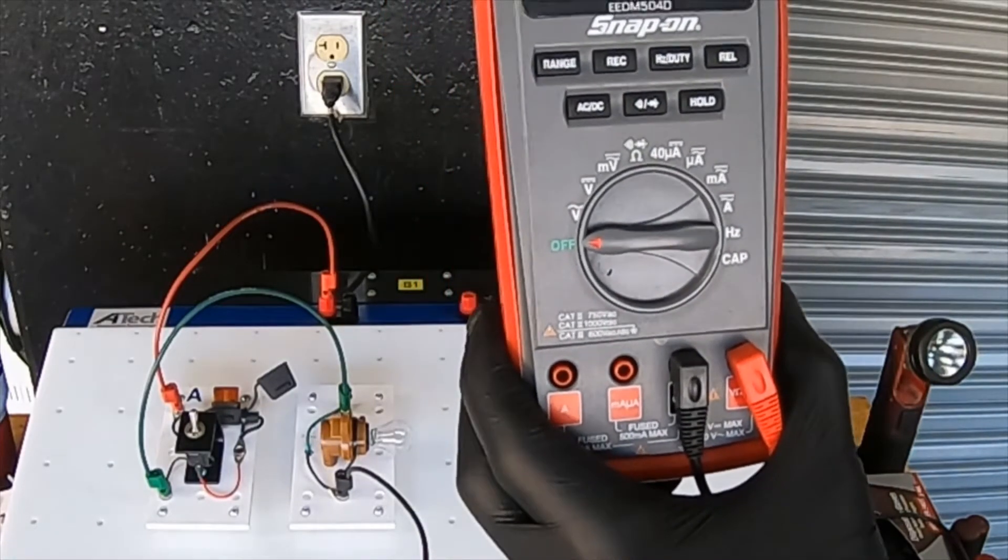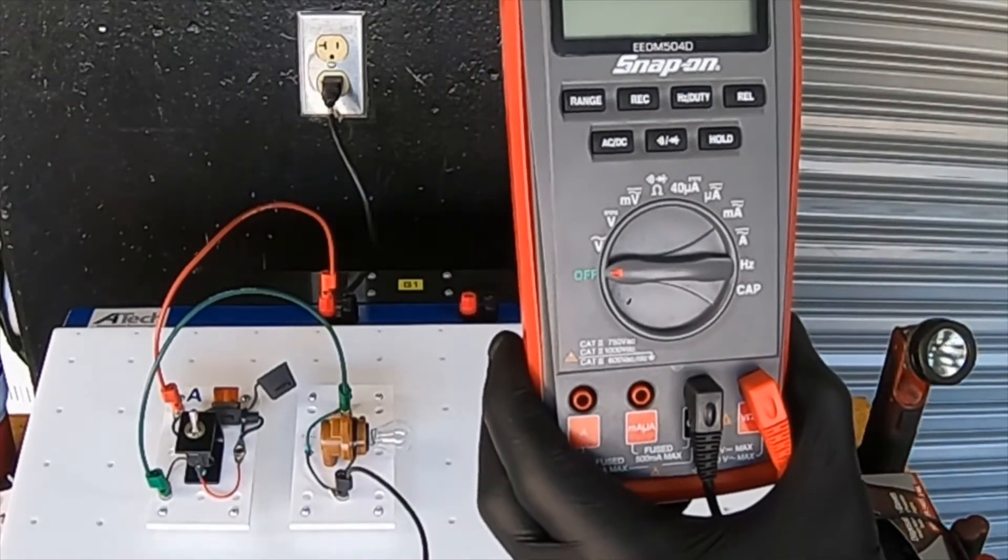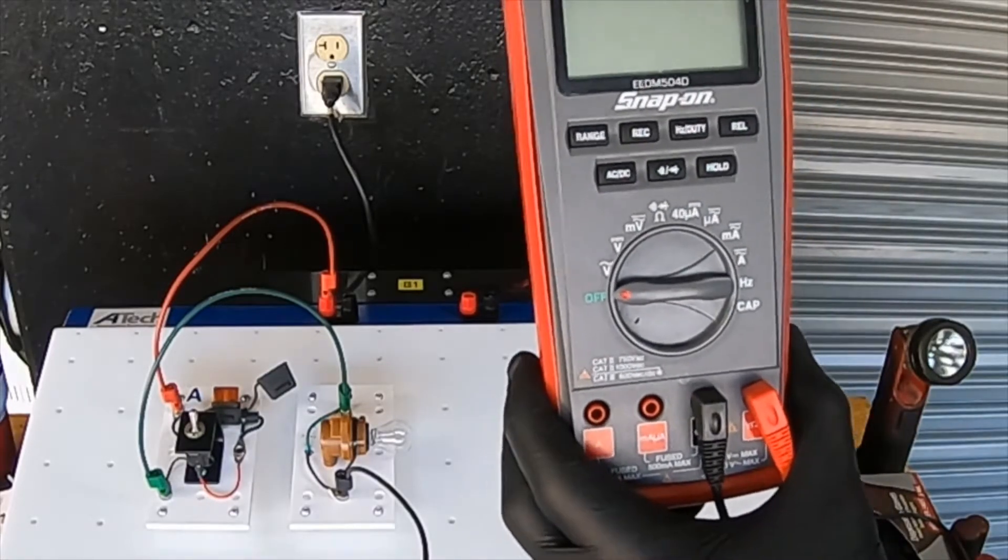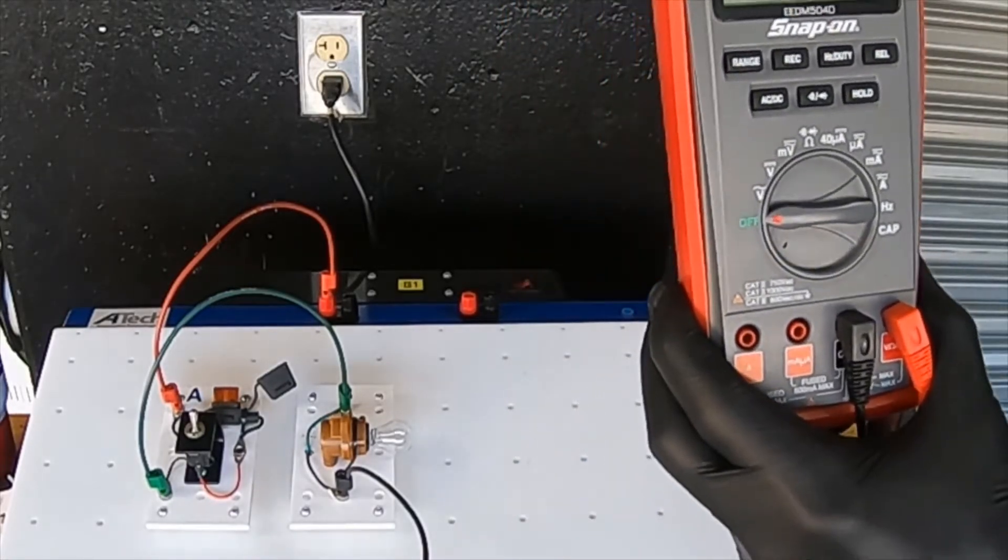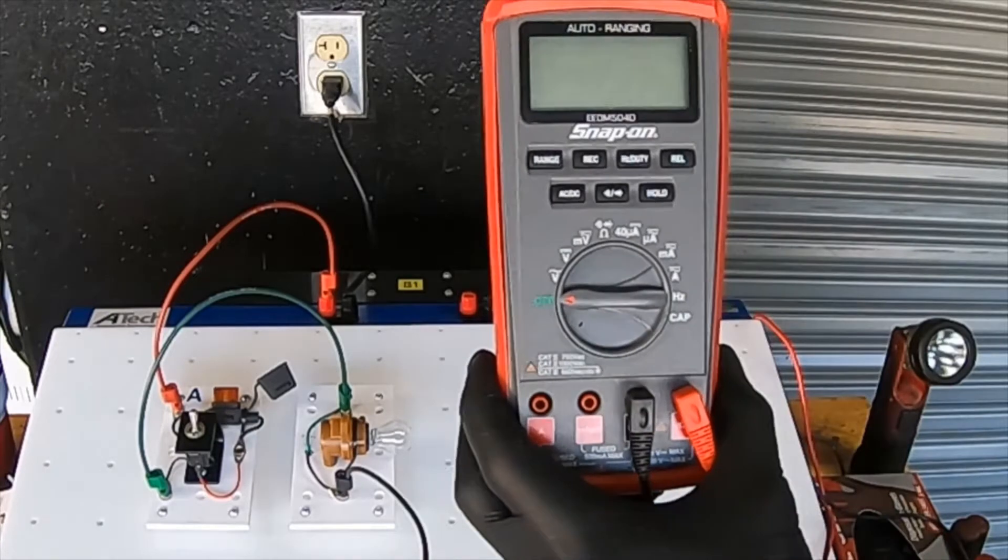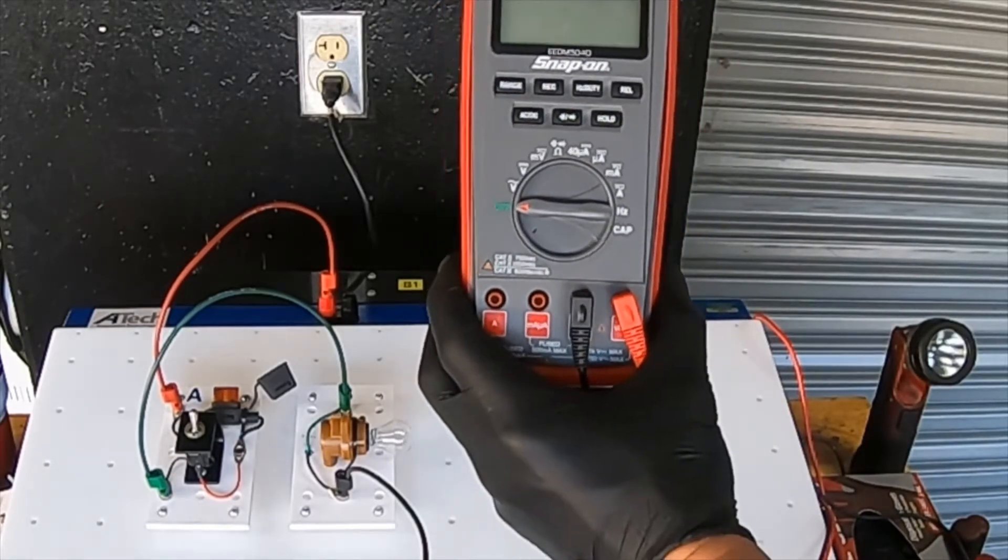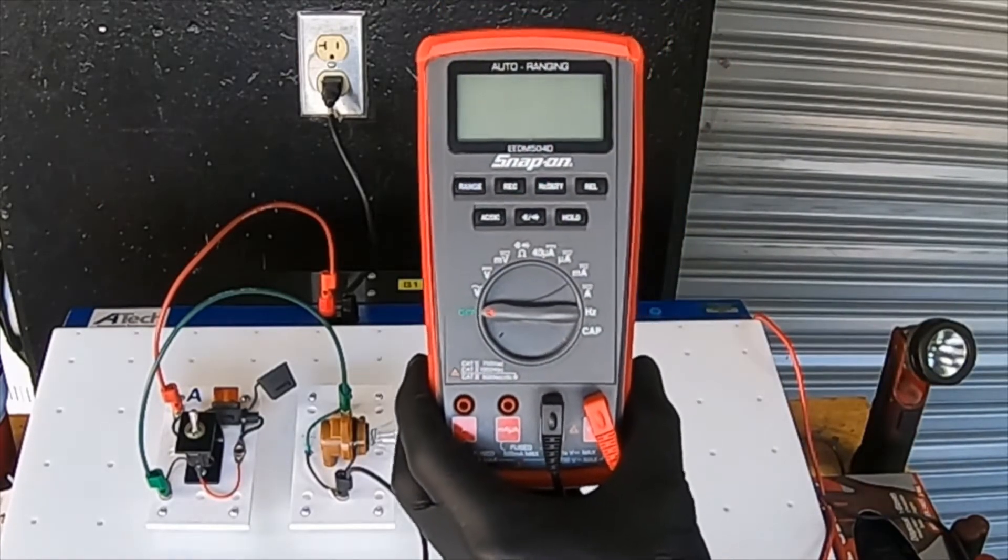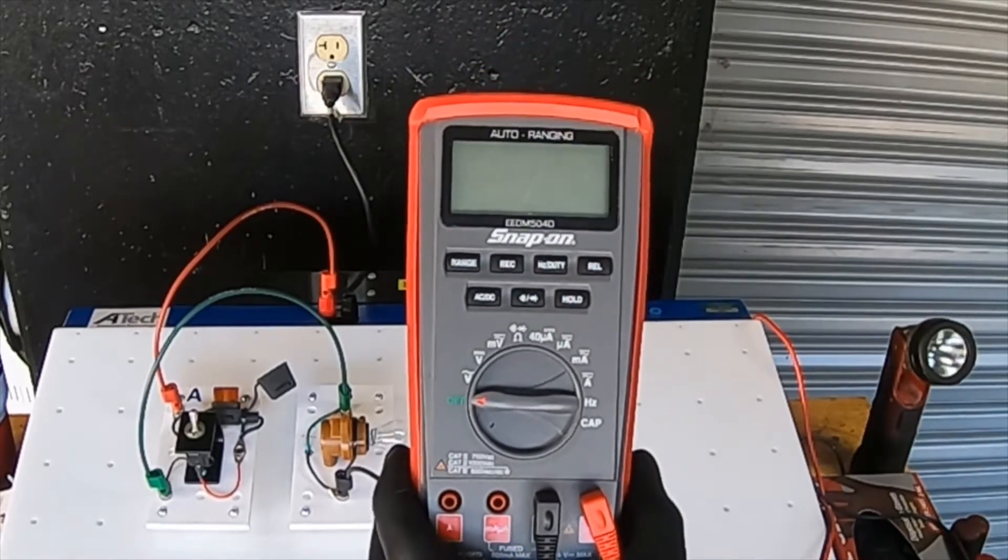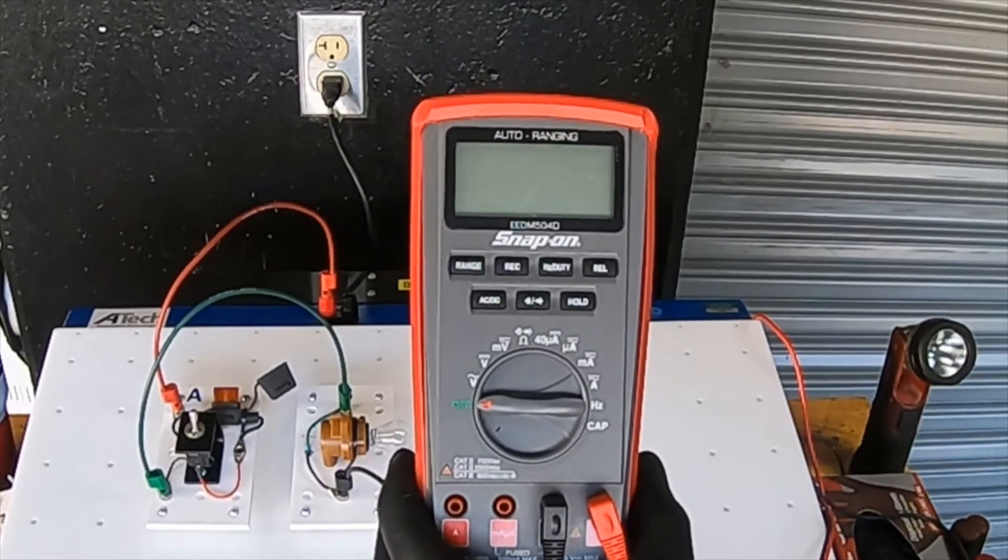So first we are going to measure AC volts. This meter is an auto-ranging meter. We will be using this meter and a manual-ranging meter throughout this series of instruction on circuits and measuring circuits.